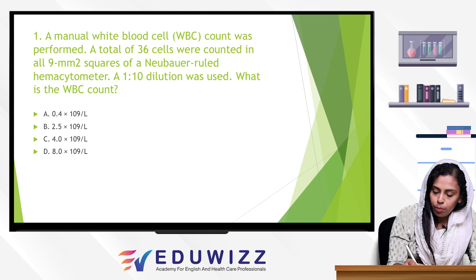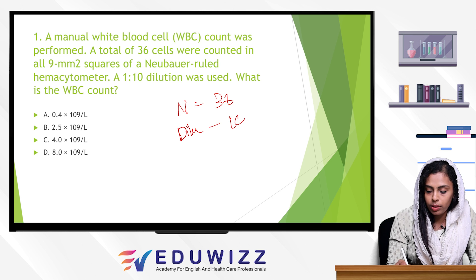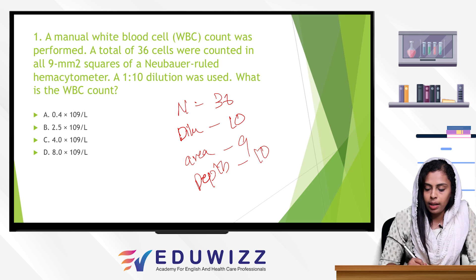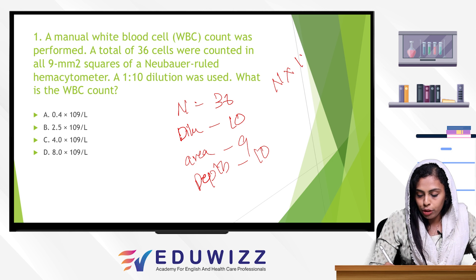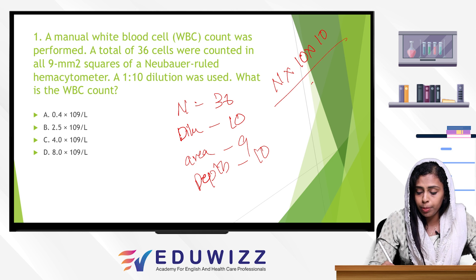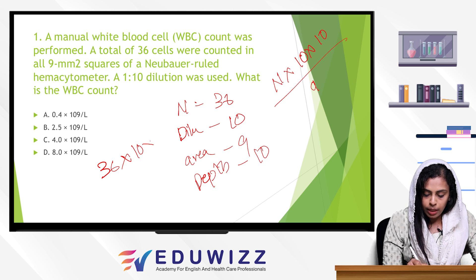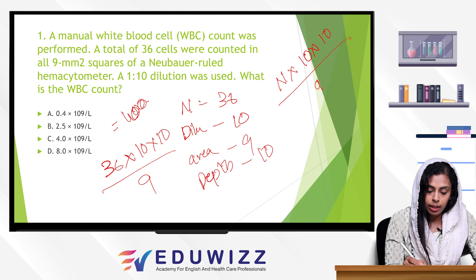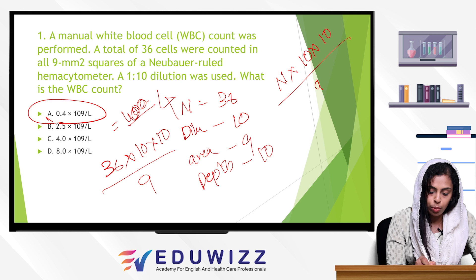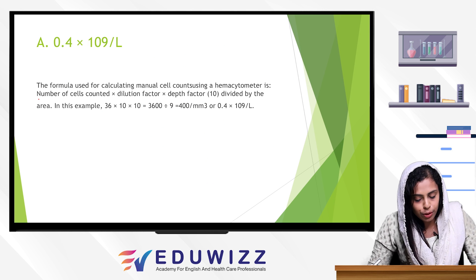We can see the information we need: the number of cells counted is 36, dilution factor is 10, area counted is 9, and the Neubauer chamber depth is 10. The calculation formula is: number of cells counted × dilution factor × depth of the Neubauer chamber ÷ area counted. The answer is 0.4 × 10⁹ per liter.